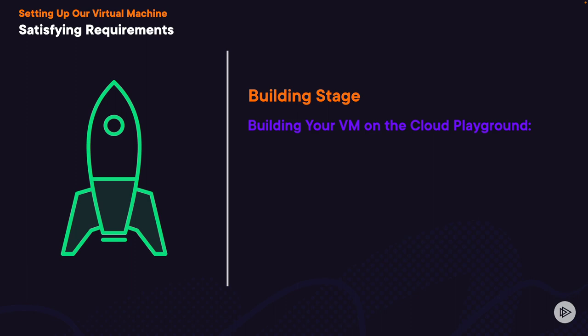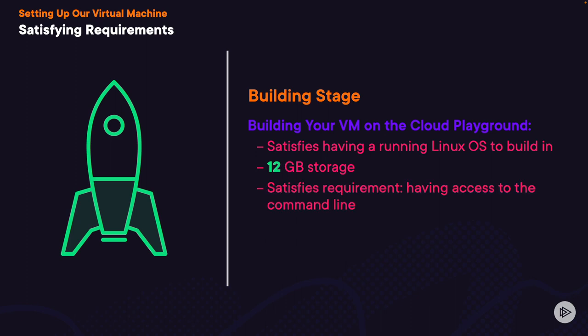Our Cloud Playground provides multiple Linux distributions and versions, satisfying the requirement for a running Linux OS. They also satisfy the requirement of having 12GB of storage, since each comes default with 20GB per server, and has a command line with a user account that has pseudo-root privilege. I recommend using virtual machines because they're easy to build and more cost-efficient as they don't use any hardware, power, or resources.